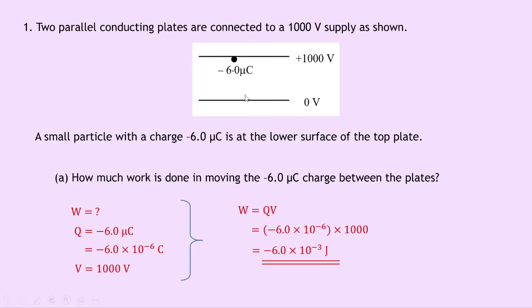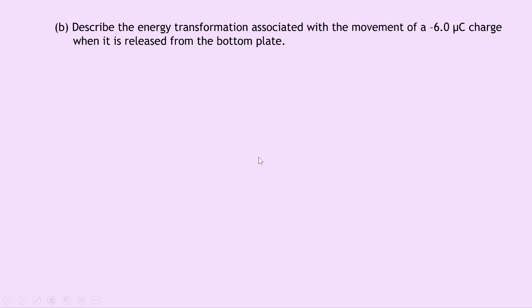And when the charge is released from the bottom plate, it will want to move to the top plate, so its electrical potential energy will be transferred into kinetic energy. So we can say that energy transformation is electrical potential energy to kinetic energy since the negative charge is attracted to the positive plate.